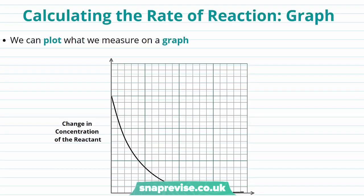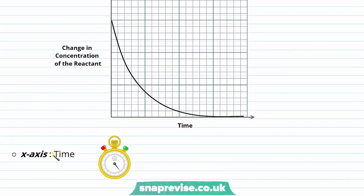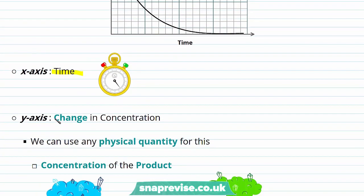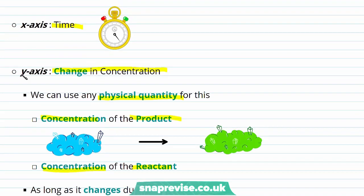Once this data has been obtained we could plot it on a graph where on the x-axis we have the time taken and on the y-axis we have the change in concentration. We can actually use any physical quantity for our y-axis — it could be the change in concentration of the product formed or the change in concentration of our reactant, as long as it changes during the reaction.